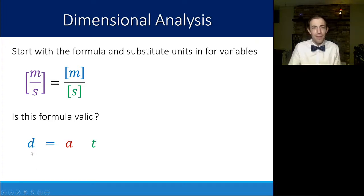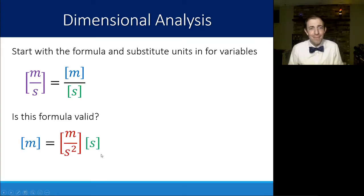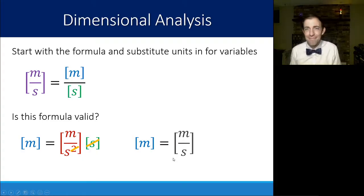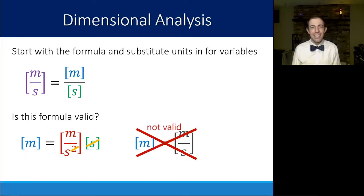Now if I do the same thing down below, distance is meters. Acceleration is meters per second squared. We'll talk about that more in this unit. And time is seconds. I get something that looks like this. I can simplify this a little bit. I got seconds squared on the bottom multiplied by seconds. One of these seconds is going to go away if I cancel it out. So I end up with meters is equal to meters per second. Now that's not an equality. That's not the same thing. So we would say, no, this equation is not valid. So just by looking at the variables and knowing what units those variables would be, I can tell you whether or not an equation is going to be valid or not.